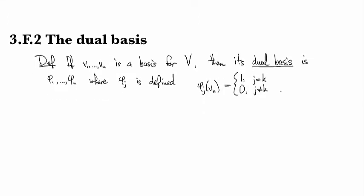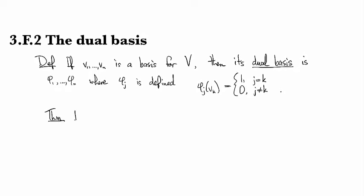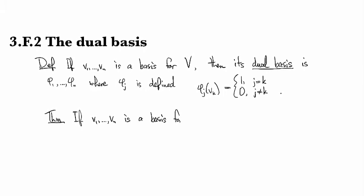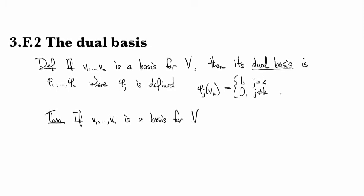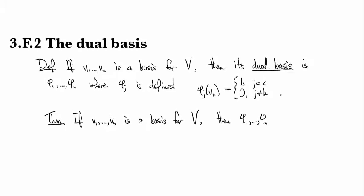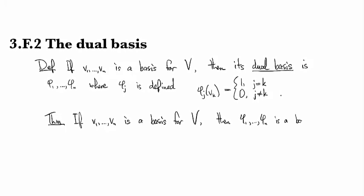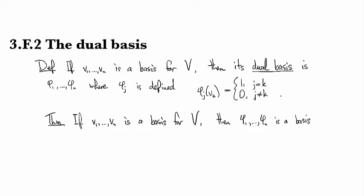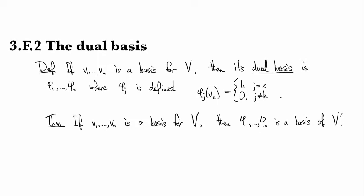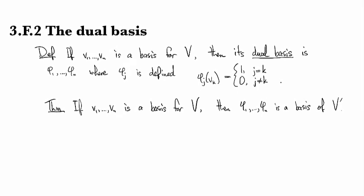And so then what we have is the very unsurprising result that the dual basis is a basis, hence the name dual basis. So if we have a basis for V, then v1-star through vn-star is a basis for V-star.